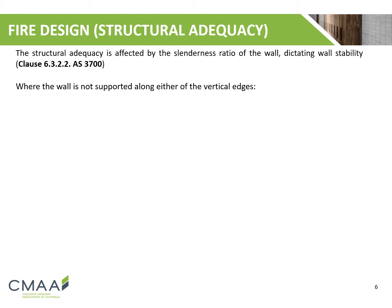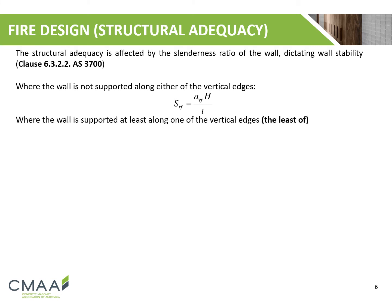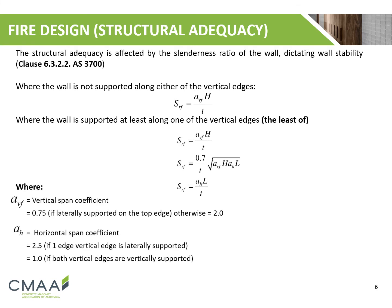If the wall is not supported along either of the vertical edges, the following formula may be used. If the wall is supported on one of the vertical edges, the minimum value generated from these three formulas is to be used. Depending on how the wall is supported, the parameters used will also vary. For walls which are non-load bearing, the structural adequacy value is irrelevant, as the wall doesn't provide any structural support.